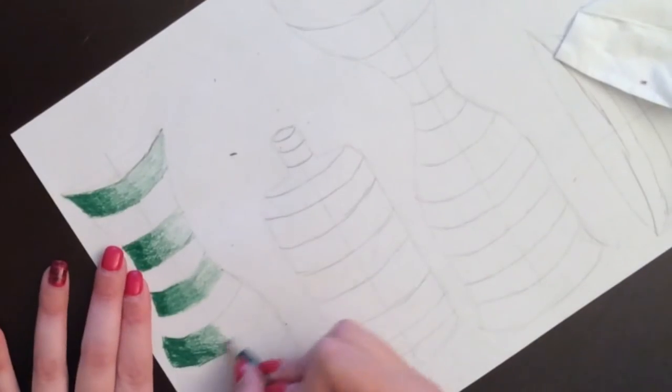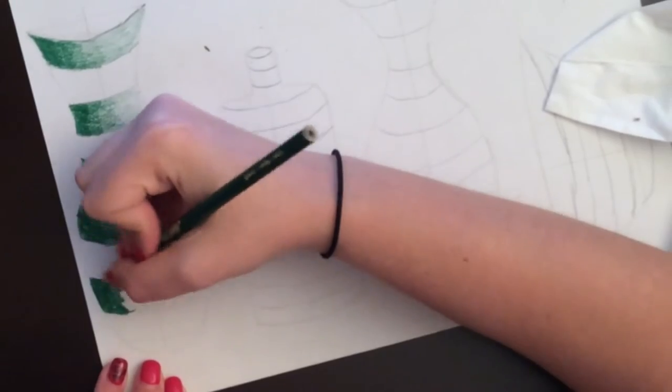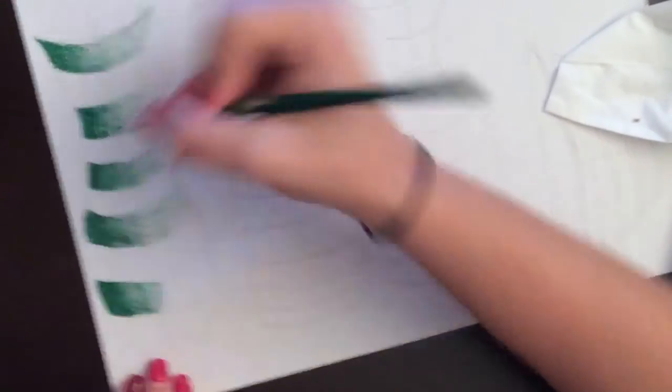You can start nice and light and then just keep adding more and more darkness until you feel you have your darkest section, followed by your medium section, and then your lightest section.